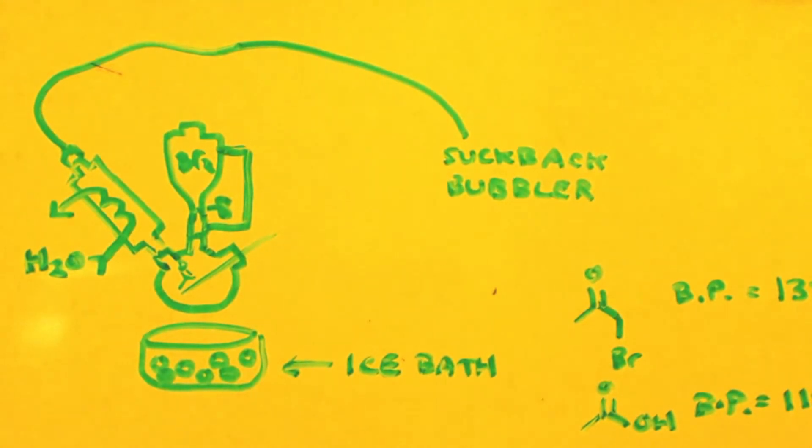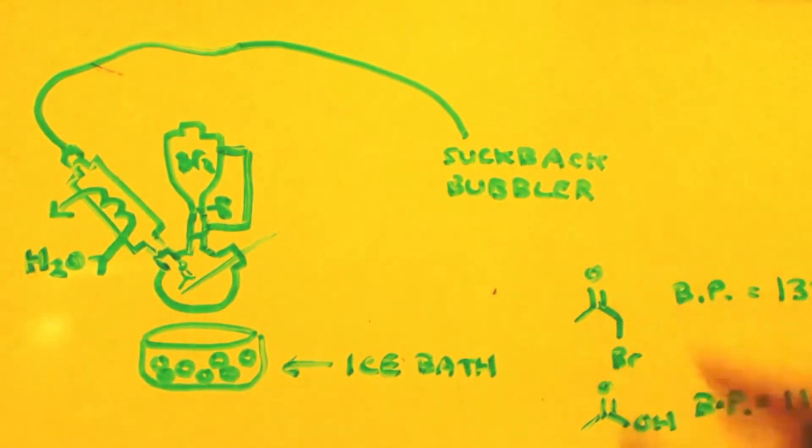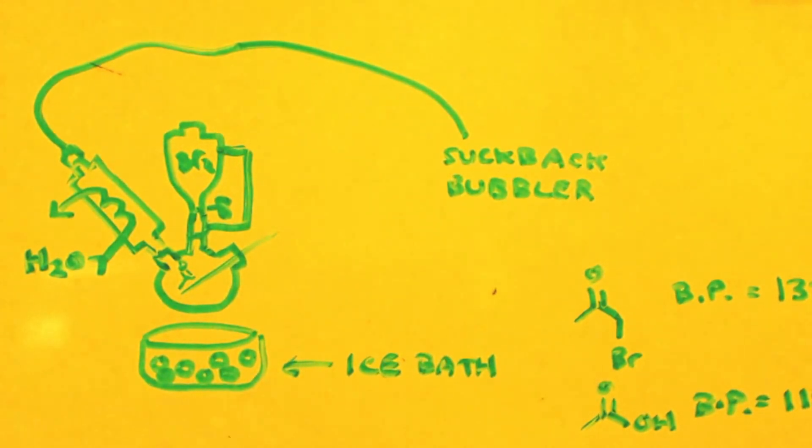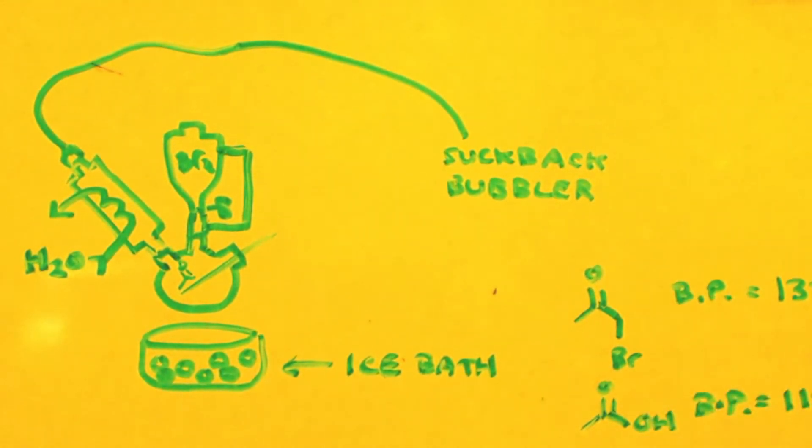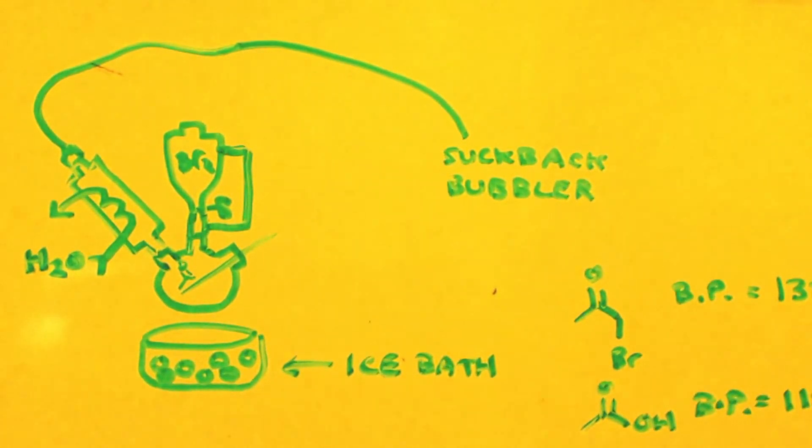So that it forms two layers. Depending on what you make, if you make enough of this then it'll form its own layer that you can see. It couldn't hurt to throw a little diethyl ether just to make it easier to extract and use your separatory funnel and separate off the water.